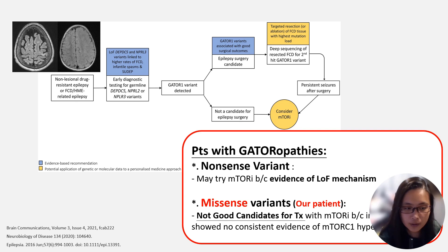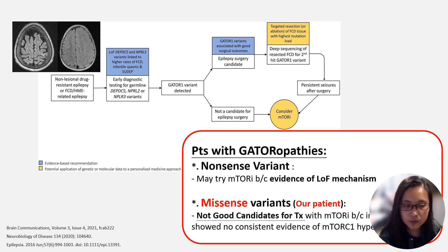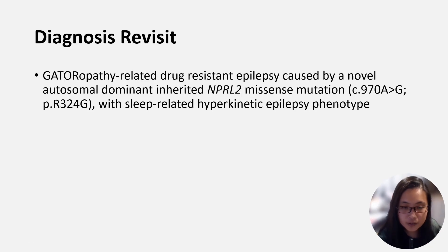Some may ask if any medication adjustments should be made in patients diagnosed with gatoropathies. Although the clinical evidence is not strong, considering the pathogenesis, mTOR inhibitors may be tried in patients with loss-of-function mutations. However, because missense variants carry inconclusive results, further studies are warranted. Based on this discussion, we revise the diagnosis as gatoropathy-related drug-resistant epilepsy caused by a novel autosomal dominant inherited NPRL-2 missense mutation with sleep-related hyperkinetic epilepsy phenotype.